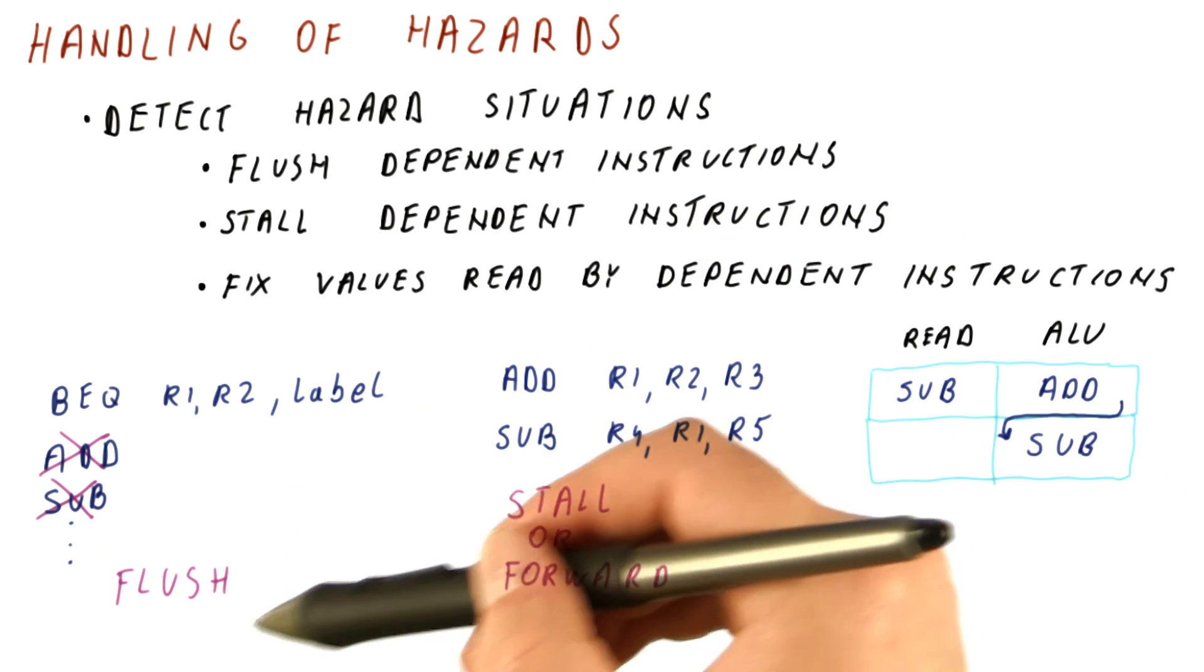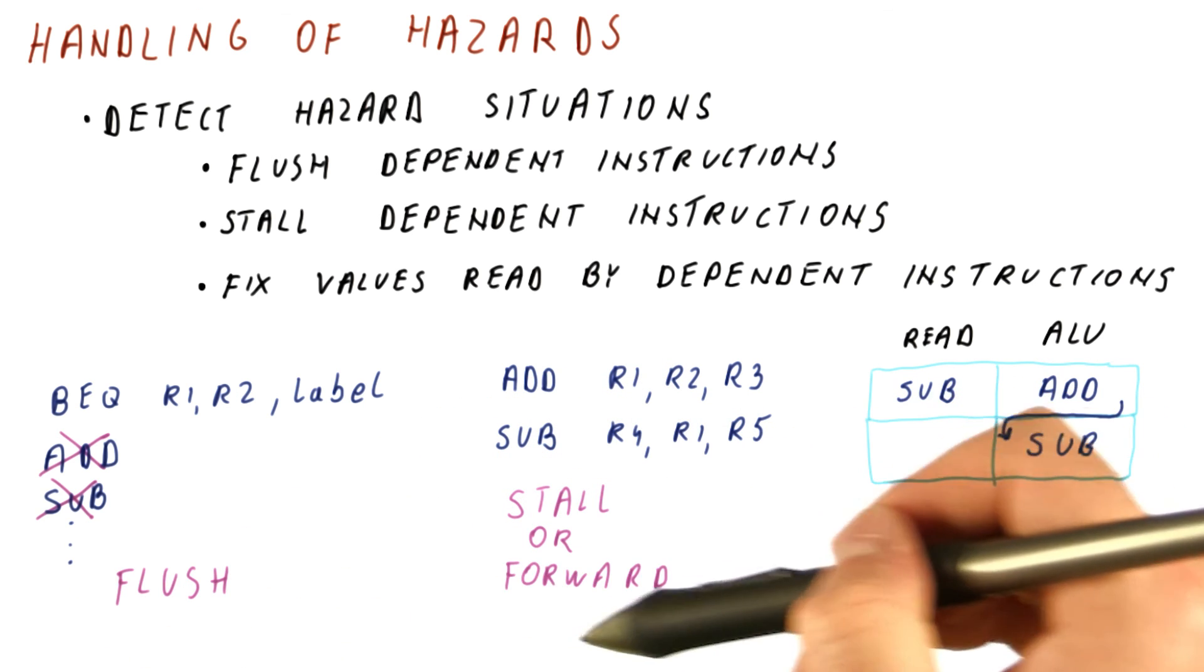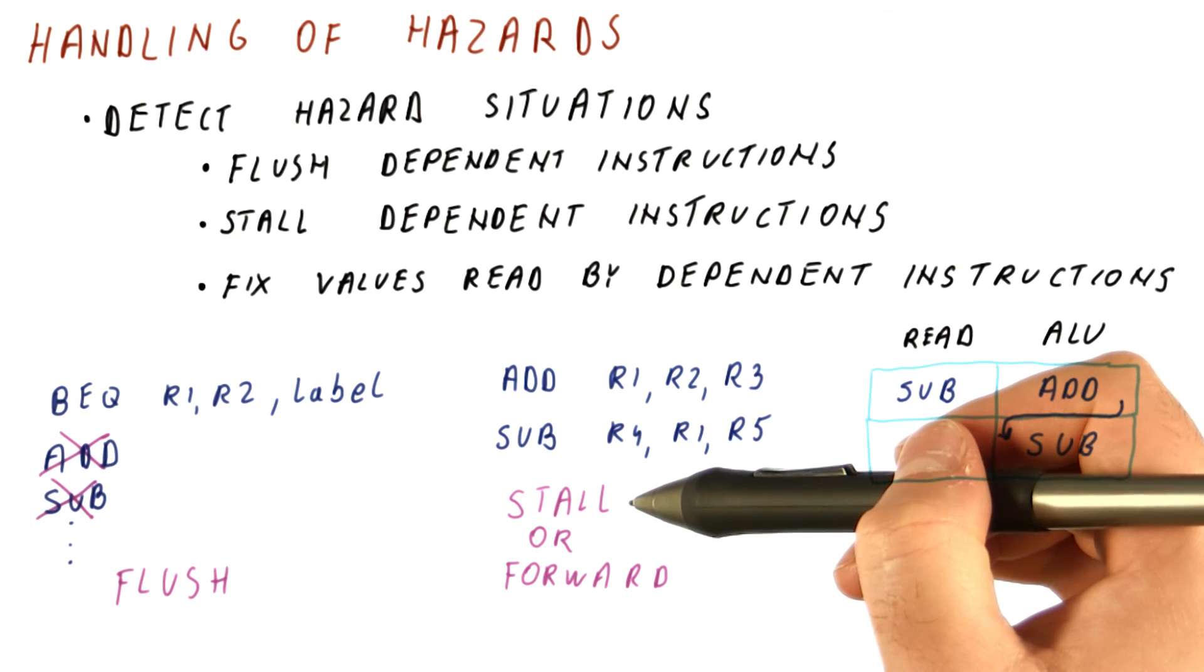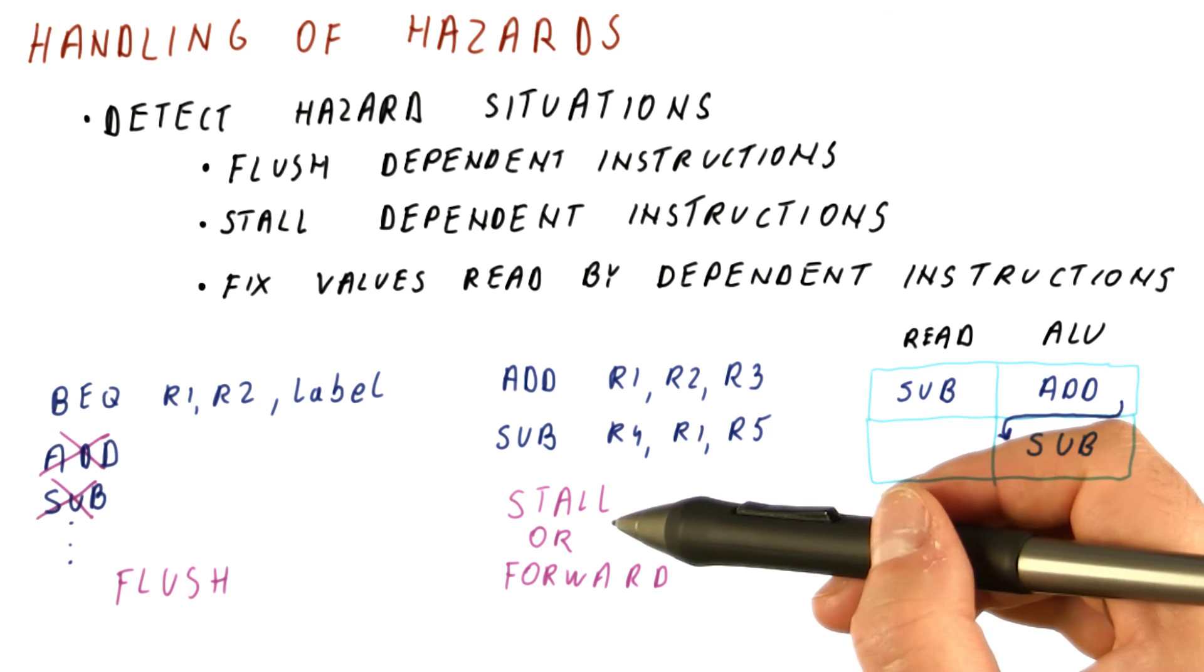So basically, for control hazards we need to flush. For some data hazards, we can either stall or forward, and we prefer forwarding because it doesn't introduce stalls in the pipeline. And for some data hazards, at least some stalls are necessary.